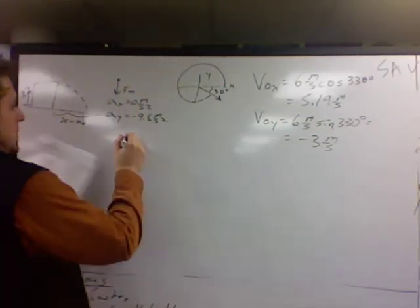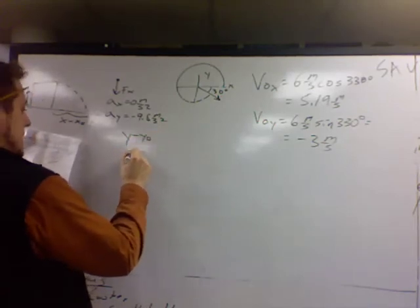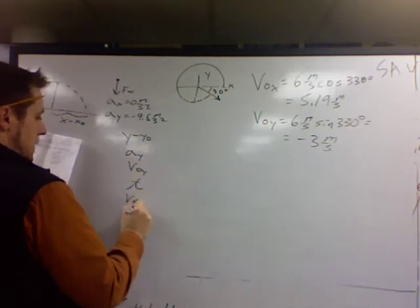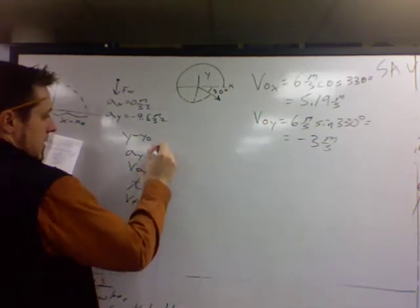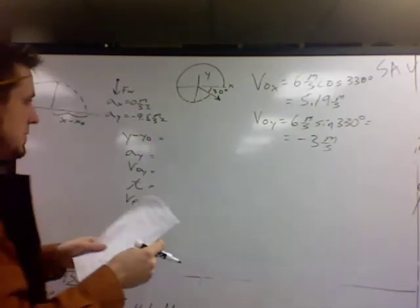I'm going to write the five variables in the y direction: y minus y naught, acceleration, initial velocity, time, and the final in the y. Remember, you do this just in the y or just in the x, no mixing. I'm doing this for the y direction.